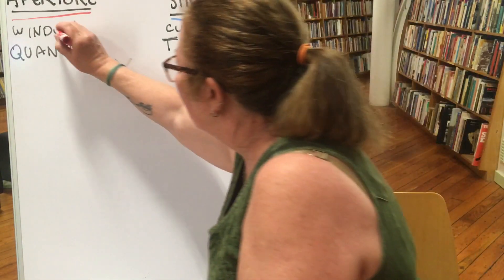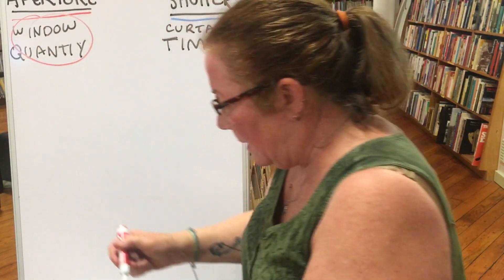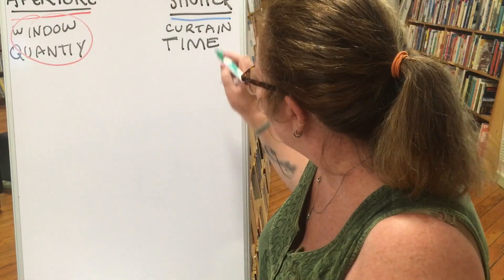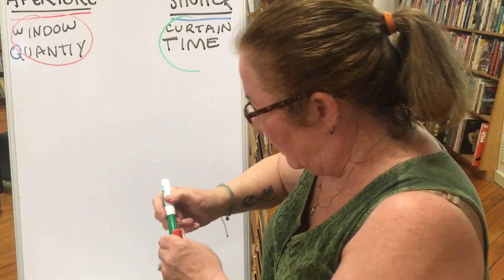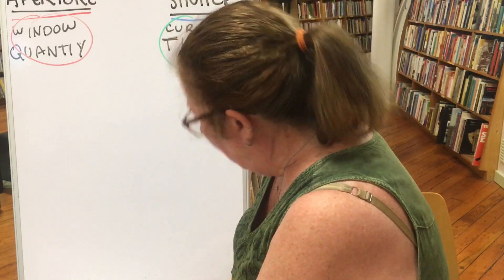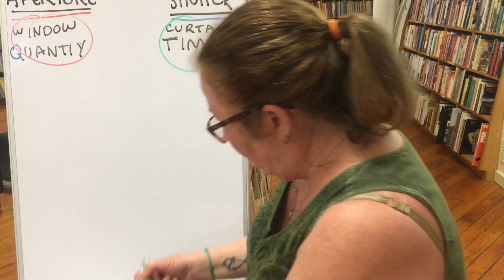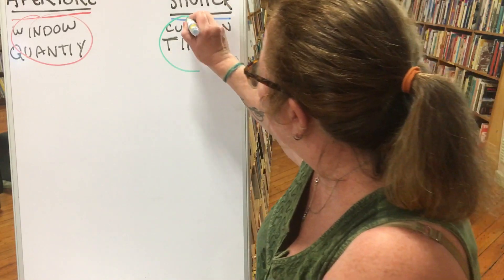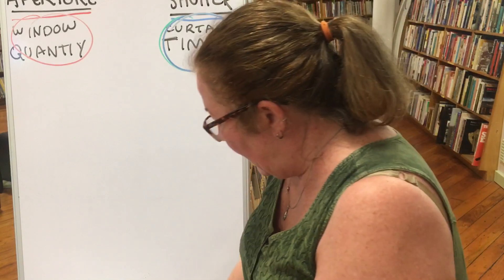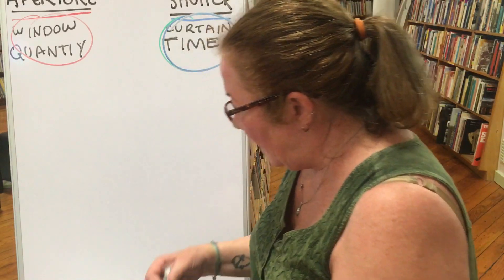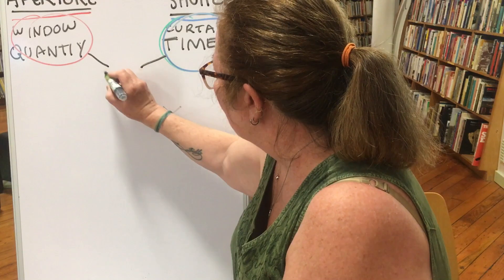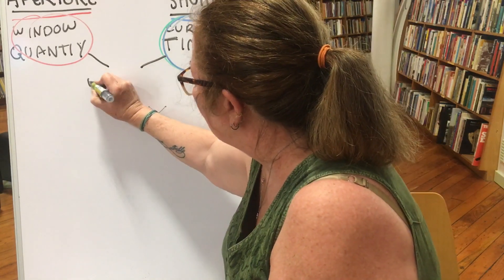So we've got the window with quantity and the curtain with time — we'll use blue for that. Now remember, these two work together to make an exposure.